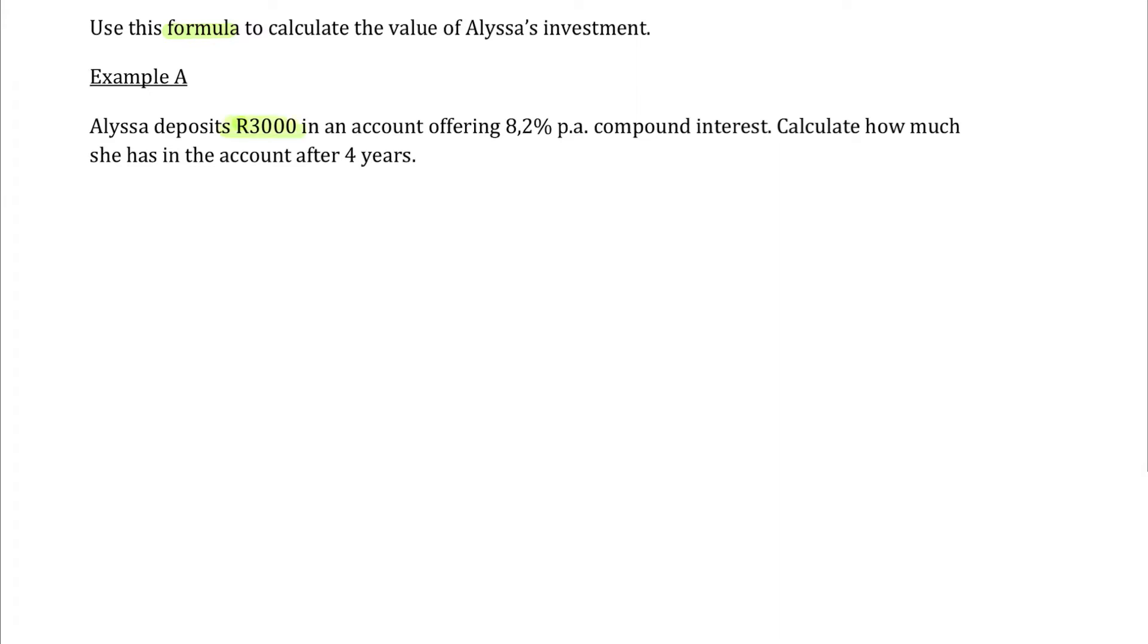So remember, Alyssa deposited 3000 Rand, think about which letter that's going to represent. The account offered 8.2% per annum compound interest. And we want to know how much she has in the account. And that's all of the money after four years.